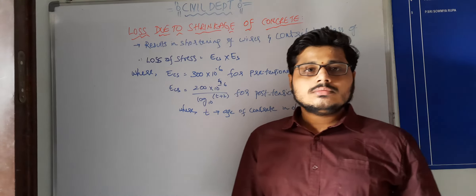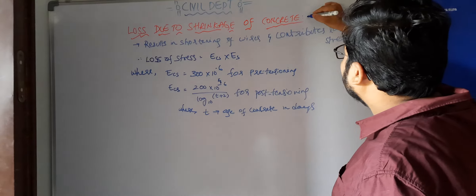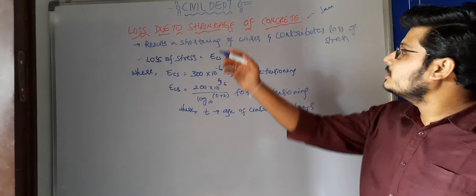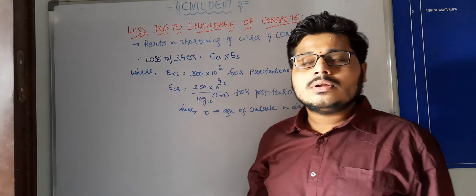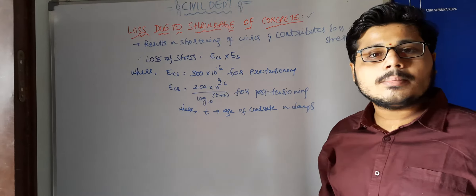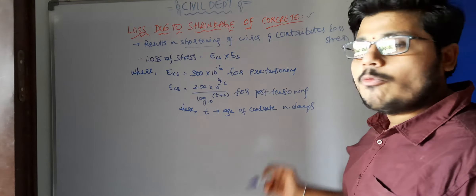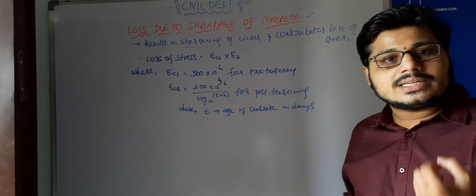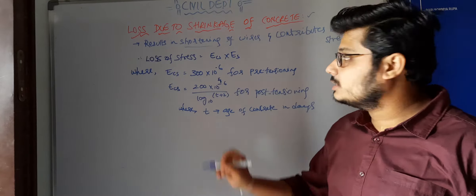Good morning students. Now we will come to the topic of losses due to shrinkage of concrete. This is also one type of loss which is immediate — not time-dependent. We have already discussed loss due to elastic shortening. Now we will discuss loss due to shrinkage of concrete. Shrinkage means deformation, which results in shortening of pre-stressed wires, causing loss of stress.